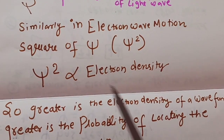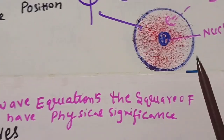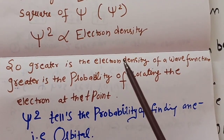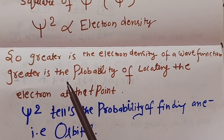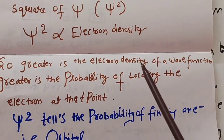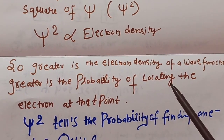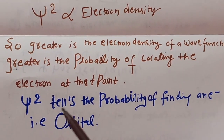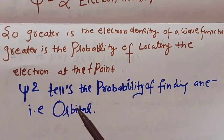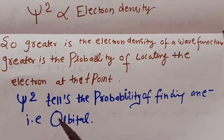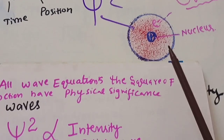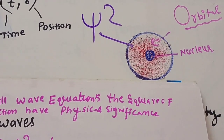What is electron density? It is the probability of finding an electron around the nucleus — that is only the electron density. So we can say that greater is the electron density of a wave function, greater is the probability of locating the electron at that point. As high the electron density of the wave function, greater will be its probability of locating the electron at a particular point. Psi squared tells us the probability of finding an electron — that is, it tells us about the orbital.